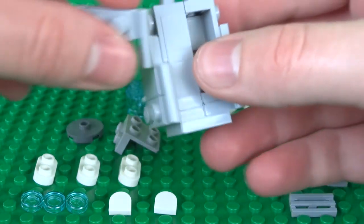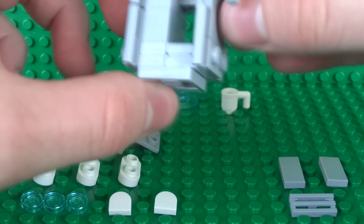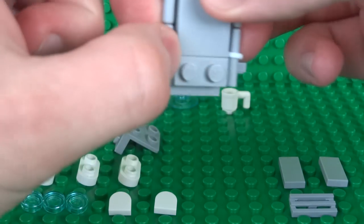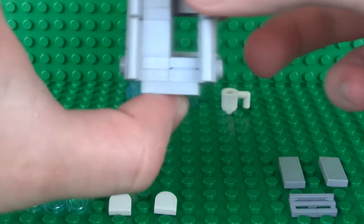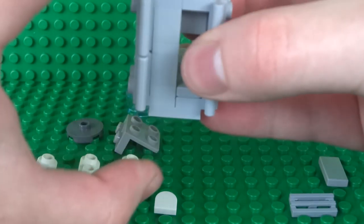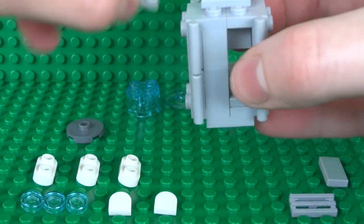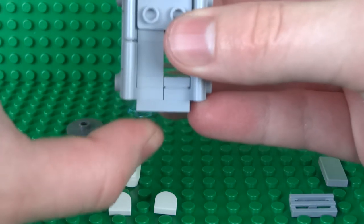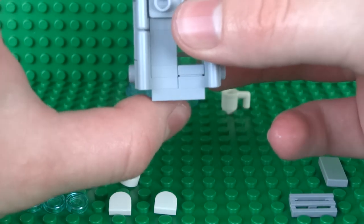Then we can add two more 1x2 modified plates just to finish off the design with the bars, and now we can build up the top of the water cooler with a 1x2 tile and another downwards facing 1x2 bracket piece.